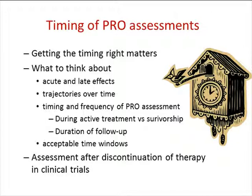Now we're moving on to timing of PRO assessments, which is absolutely critical — getting the timing right really matters. The sorts of things you need to think about are: are there acute effects and what are they, and are there late effects and what are they? What are the trajectories over time of acute and late effects? This will help you decide on the timing and frequency of PRO assessment both during the active treatment phase and the survivorship phase, and also how long you want to follow patients up. We also need to think about whether or not to assess patients after they discontinue therapy, and this is particularly relevant in the clinical trials context.